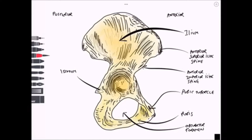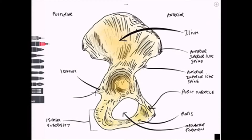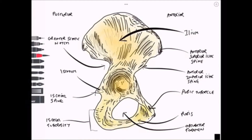Moving posteriorly, a really important landmark: the ischial tuberosity — a very prominent feature and an important site for the attachment of the posterior lower limb muscles, the hamstring group. A projection on the posterior surface known as the ischial spine creates two depressions above and below. We've got the lesser sciatic notch below and the greater sciatic notch above. These notches are turned into foramina by two ligaments — the sacrospinous ligament and the sacrotuberous ligament.